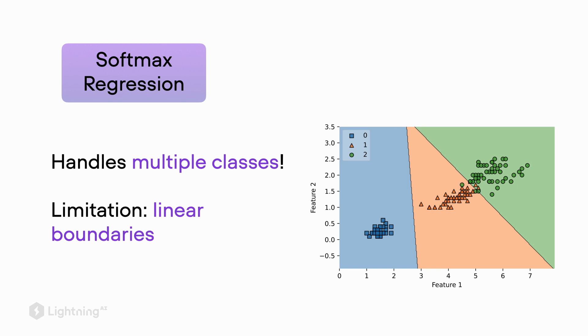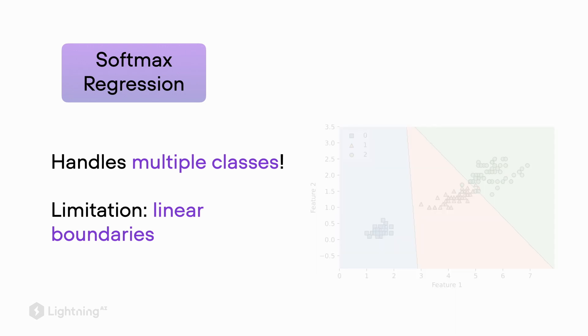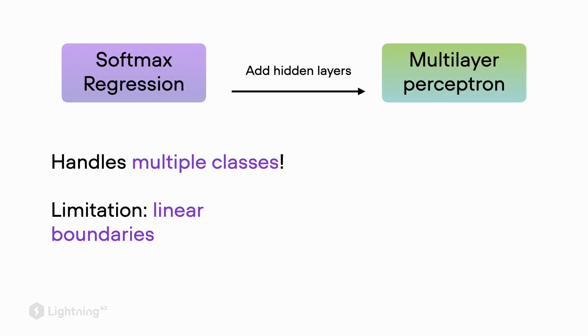It can only create linear boundaries. To overcome this limitation of softmax regression, we add multiple hidden layers to it. We actually modify softmax regression with hidden layers to get the so-called multi-layer perceptron model.